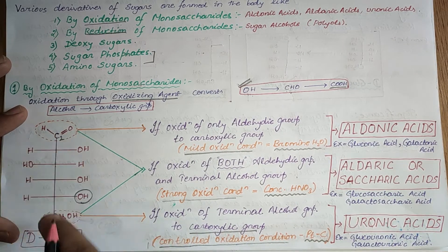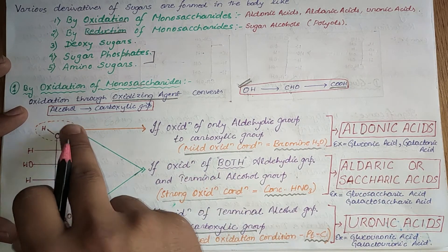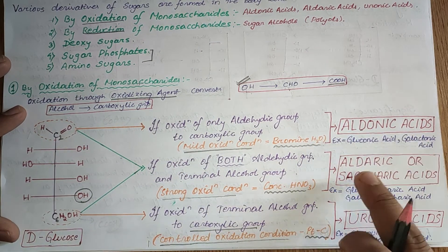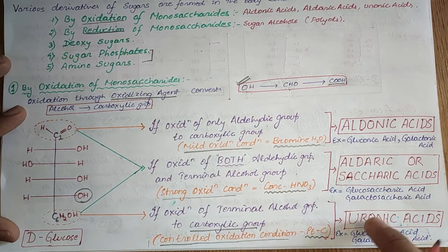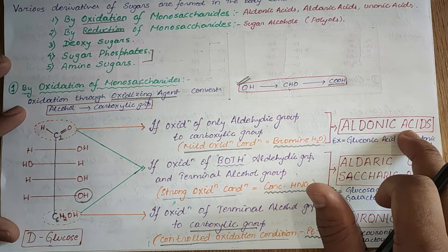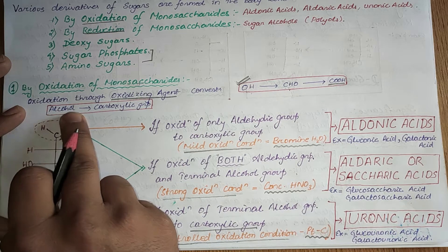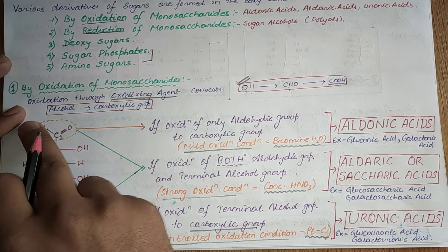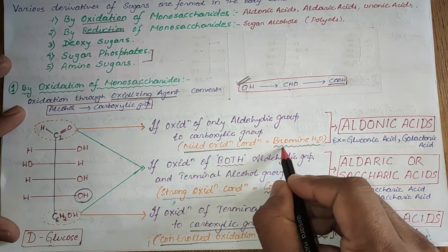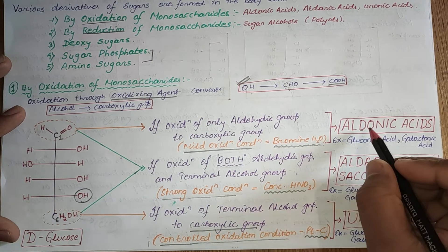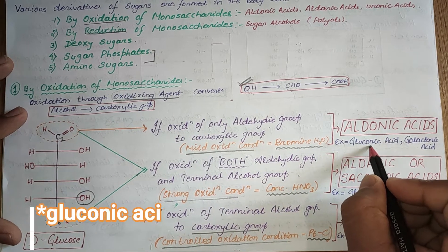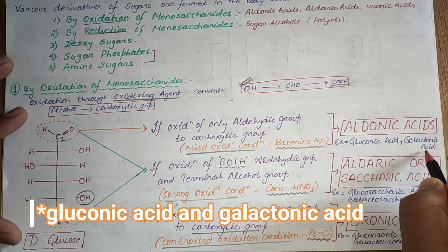When oxidation of these groups takes place, it gives certain types of products: aldonic acids, aldaric or saccharic acids, and uronic acids. Aldonic acids are formed when only the aldehydic group is oxidized to a carboxylic group under mild conditions — that is, in bromine water. Examples include gluconic acid and galactonic acid.